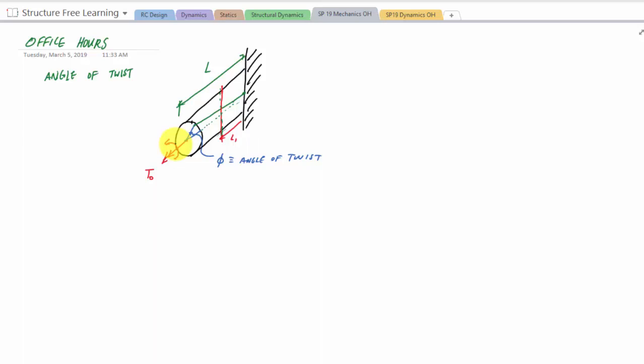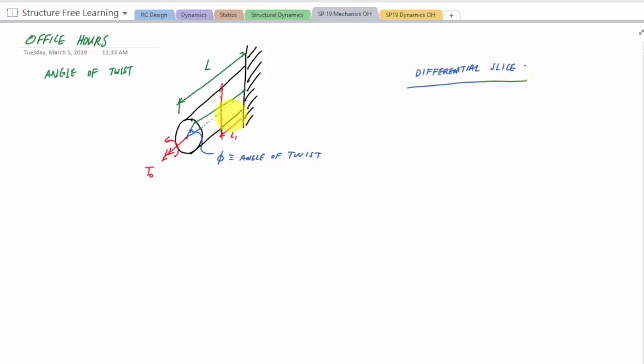So what happens is, if I were to look at a differential slice of this right here, a differential slice. So here, if I take a slice, and this would be like DX. And so here is this initial line, and then once I apply a torque, there's a torque on the inside of it, on both sides, right? It's twisting this segment, and this is my deformed state.